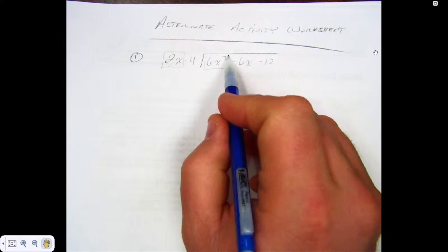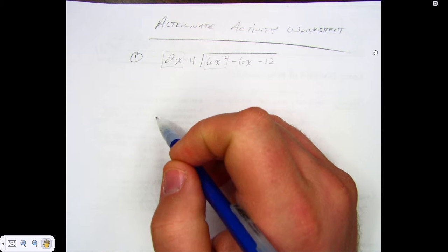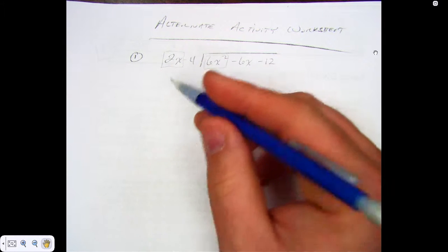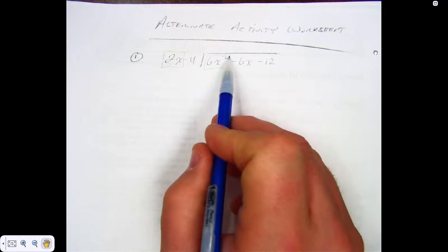As I've told you guys, we always worry about what the first one divides into the next one. So I want to know what I can multiply 2x by and get 6x squared as an answer.